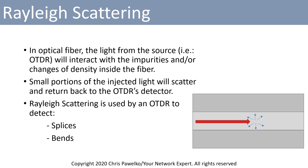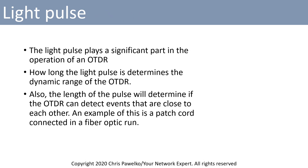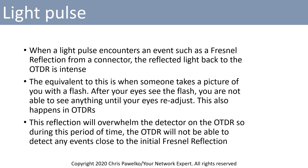Rayleigh scattering is used by an OTDR to detect splices and bends in the fiber. The light pulse plays a significant part in the operation of an OTDR. How long the light pulse is determines the dynamic range of the OTDR. Also, the length of the pulse will determine if the OTDR can detect events that are close to each other. An example of this is a patch cord connected in a fiber optic run. When the light pulse encounters an event such as a Fresnel reflection from a connector, the reflected light back to the OTDR is pretty intense. The equivalent is when somebody takes a picture of you with a flash — after your eyes see the flash, you're not able to see anything until your eyes readjust. This also happens in OTDRs; the reflection will overwhelm the detector, so during this period of time, the OTDR will not be able to detect any events close to the initial Fresnel reflection.